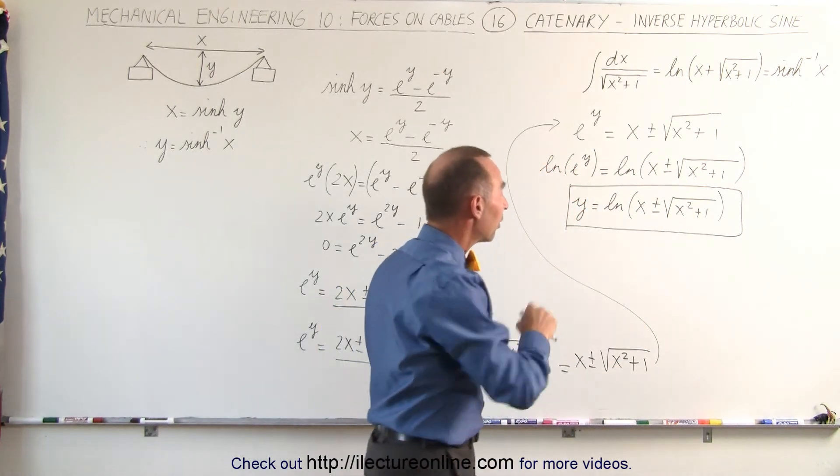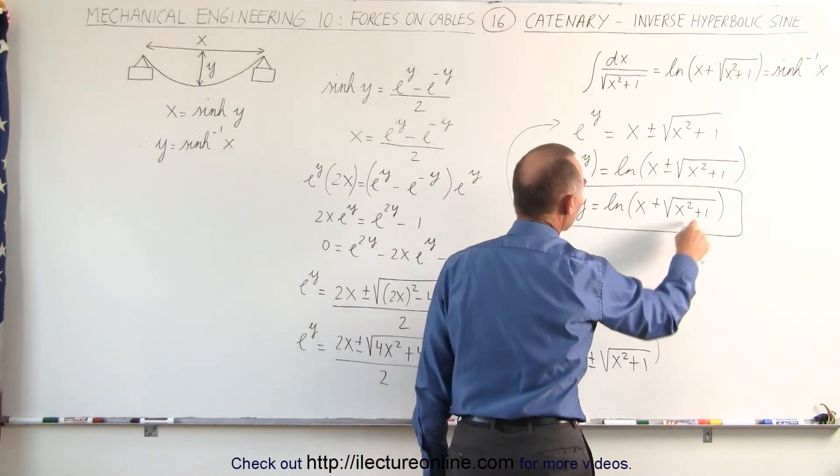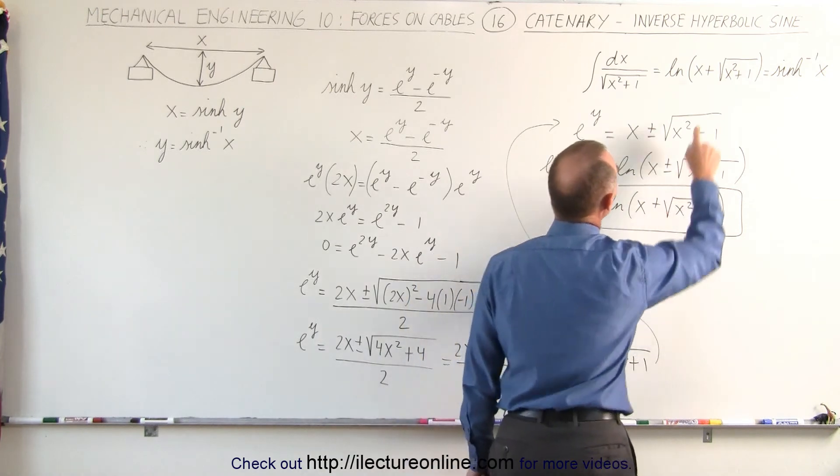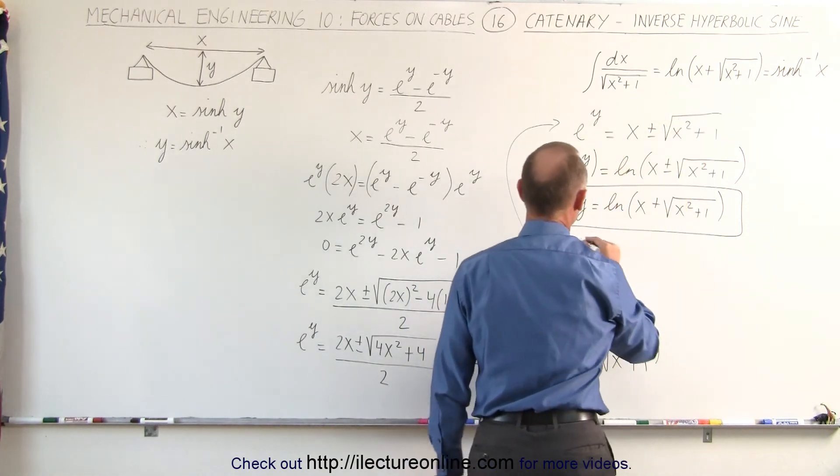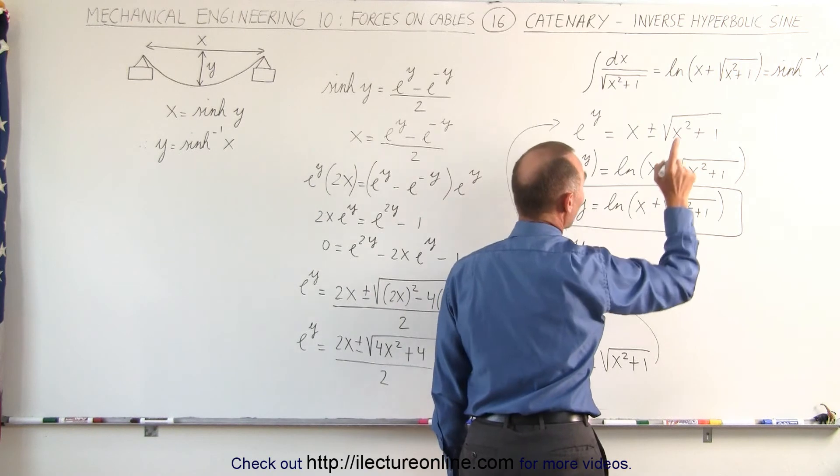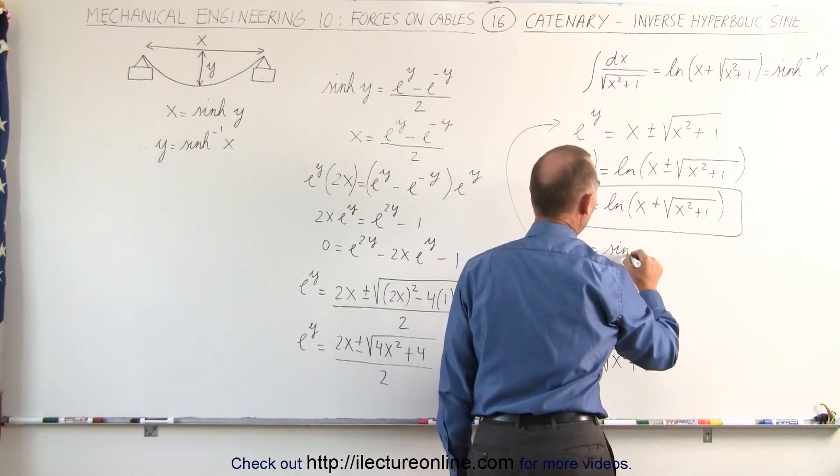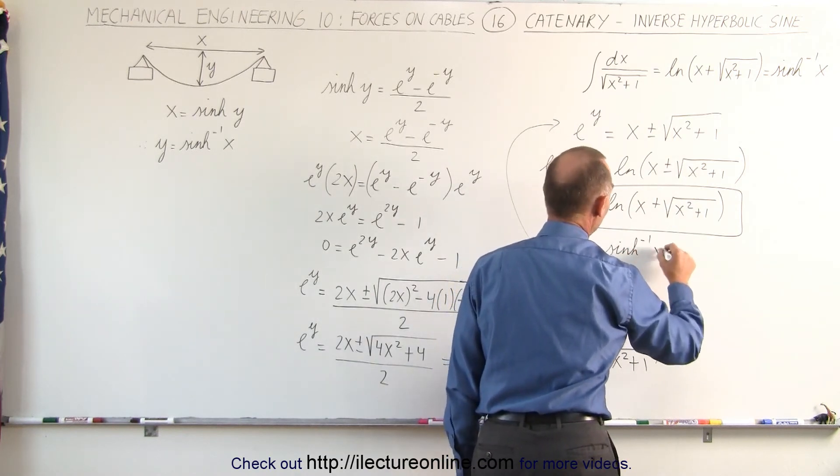But if we use the plus part of the solution to get rid of the minus, then what I have here is exactly the same as what I have there, which means that y, based upon this, must equal the inverse hyperbolic sine of x.